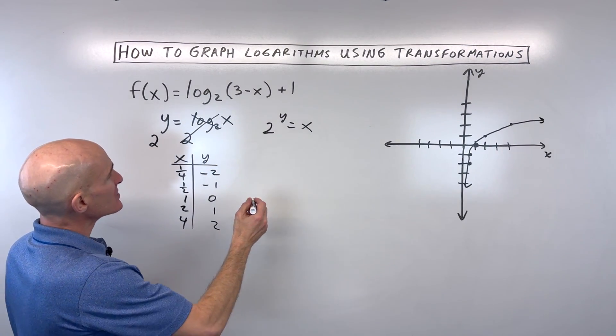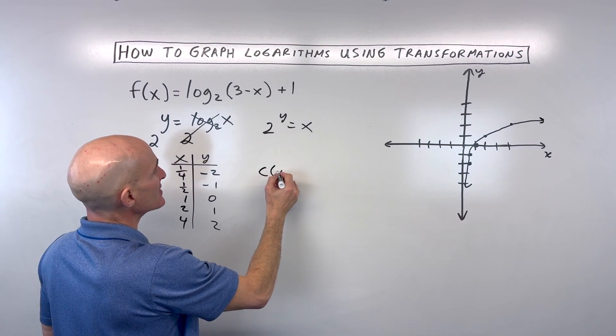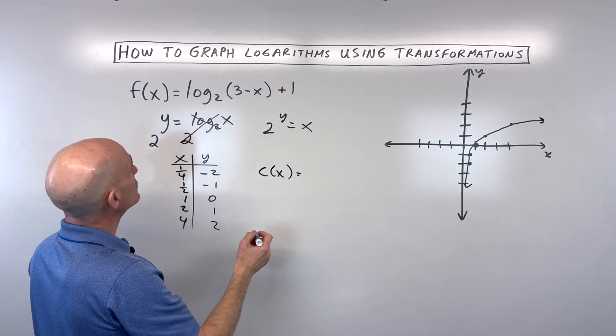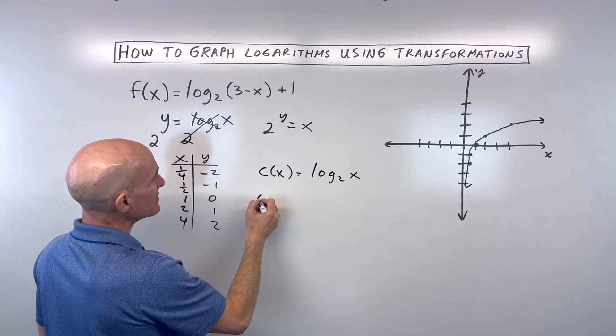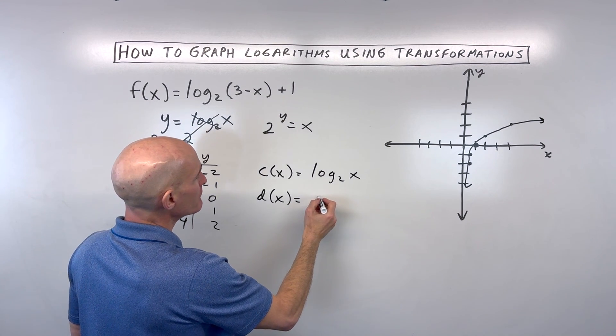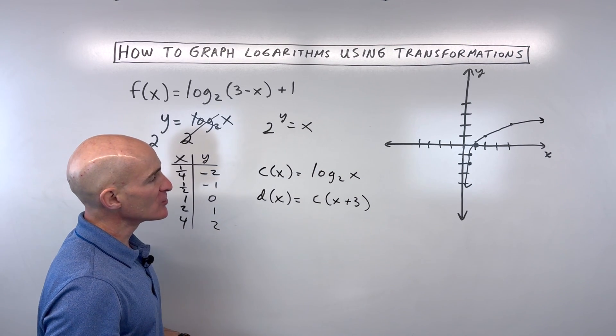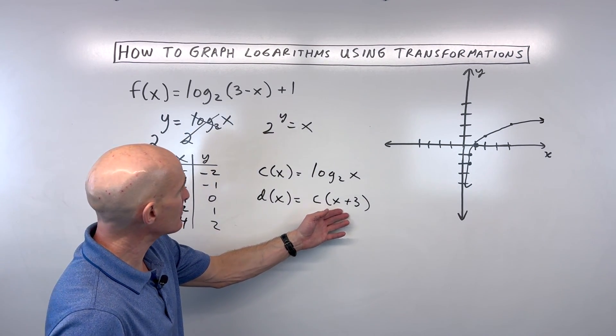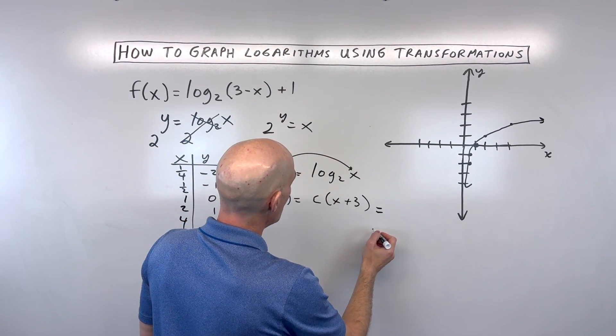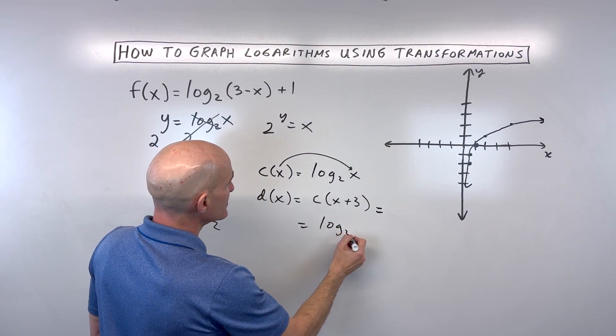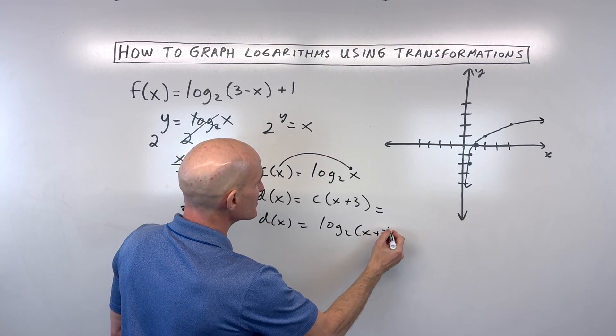So what I would do here first is I would say, let's call this c of x. We'll say c of x is equal to our basic function log base 2 of x. Let's say maybe d of x is equal to c of x plus 3. Now what is this x plus 3 doing? Well, whatever's in the parentheses, that's going to go in for x on the right. So that means that d of x is equal to log base 2 of x plus 3.